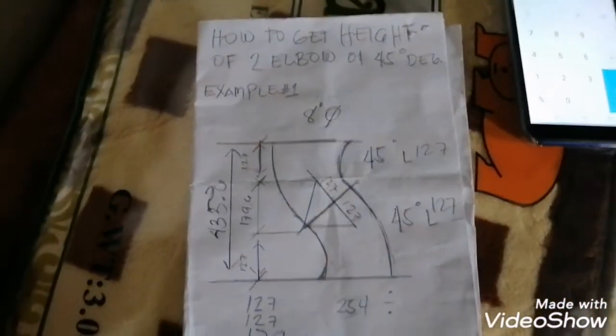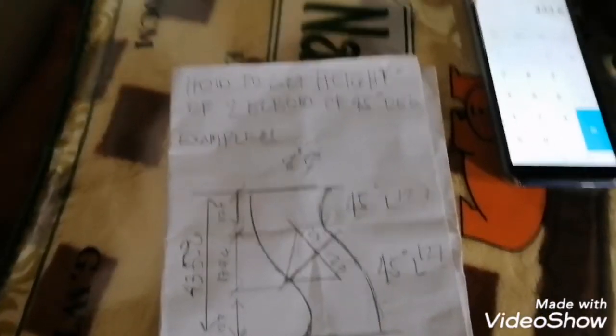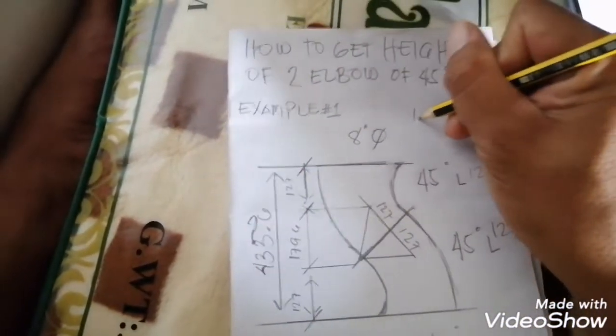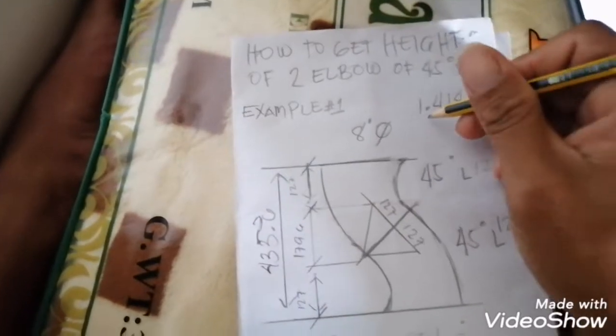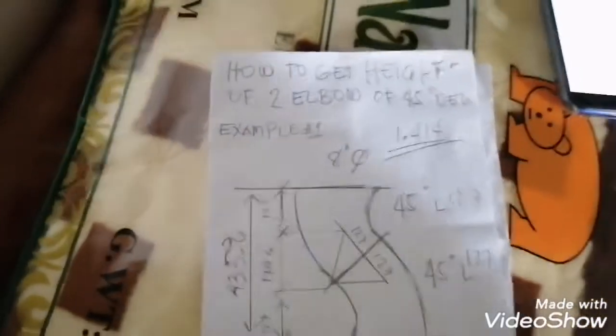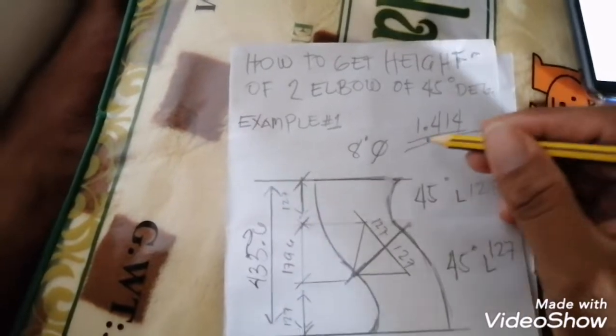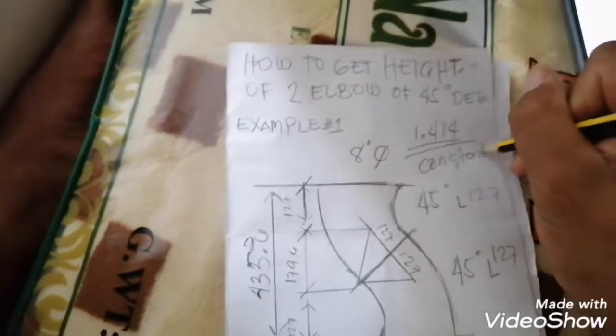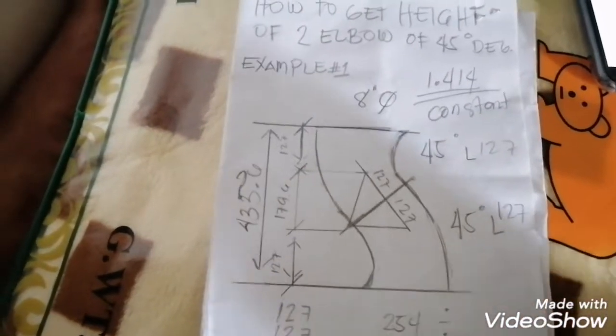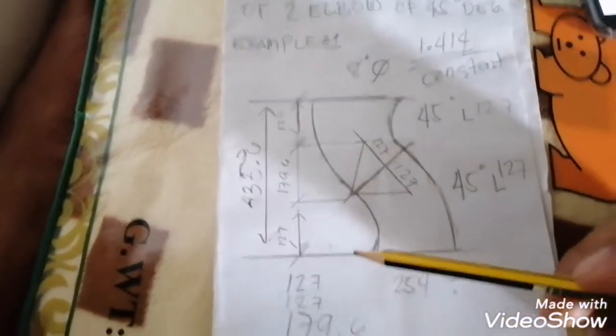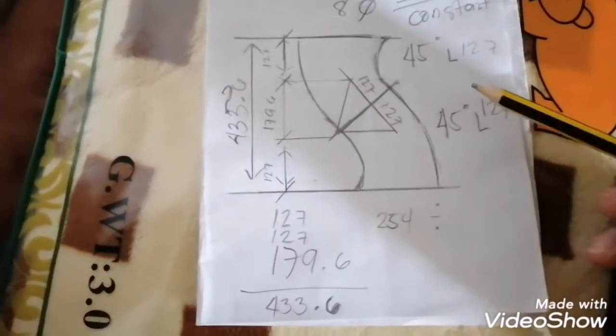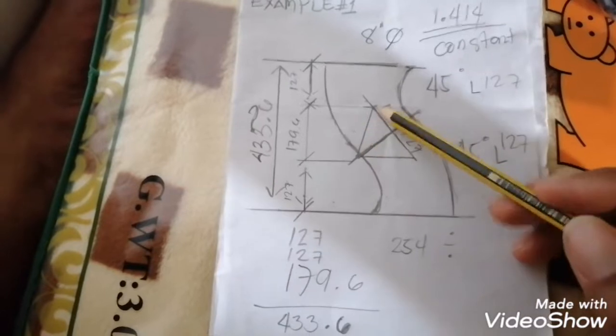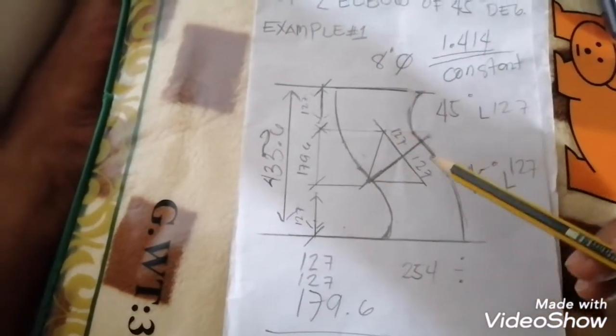Also, the constant of 45 degrees is 1.414. For easy computation, don't forget this: 1.414 constant for 45 degrees. This is easy. 127, 127, this two hypotenuse, this side 127, this 127.